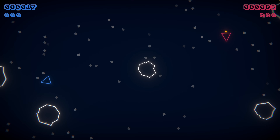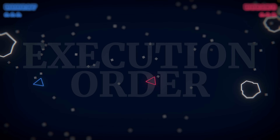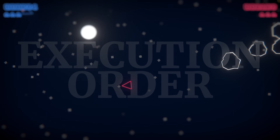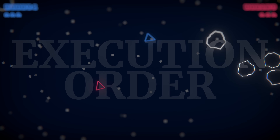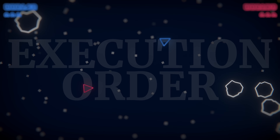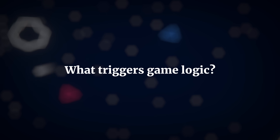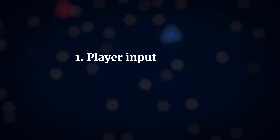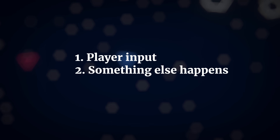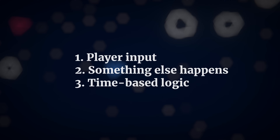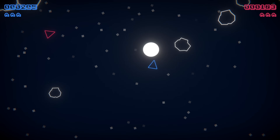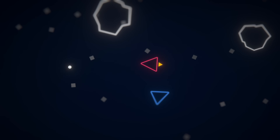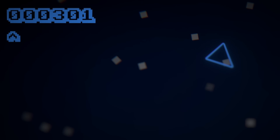One of the hardest concepts to visualise, especially as a beginner, is the order in which everything will happen. When will a function execute? If two things happen at once, which will happen first? And how can you trigger logic in a game so that it behaves the way you want? There are typically only a limited number of ways in which game logic can be executed — either the player does something, something happens coincidentally, or something happens due to the passing of time. This means that most chains of logic are rooted in only a few types of interaction: input events, physics events, time-based events, and event-based logic where one thing happens in direct response to another.